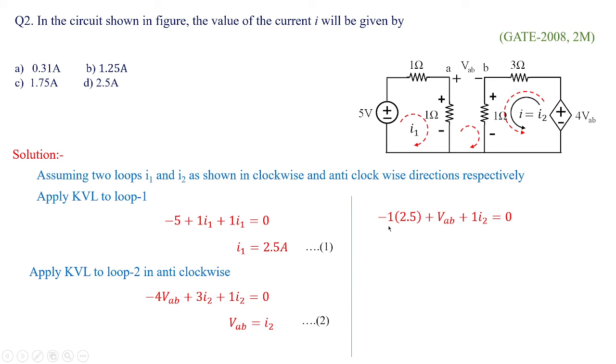I am going to get minus 1 multiplied with 2.5 amperes that is I1 value plus VAB plus 1 into I2 equal to 0. In fact, I2 is equal to VAB. I am going to apply the value of equation 2 over here. I am going to get the value of VAB is equal to 1.25 volts. In fact, once we are going to obtain the value of VAB, we are done with I2. So 1.25 amperes and in fact, that itself is nothing but current I. Option B would be the right answer.